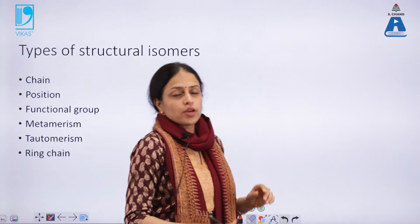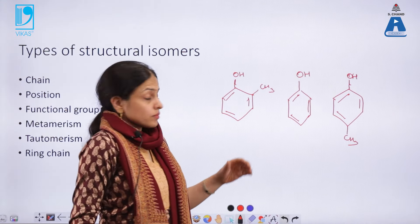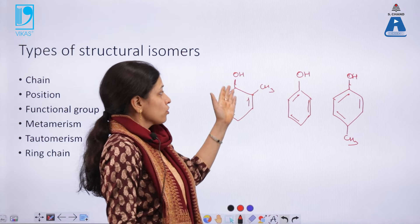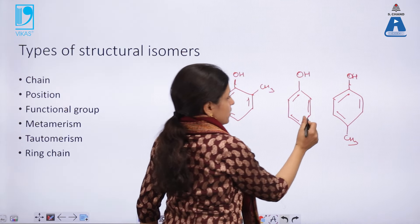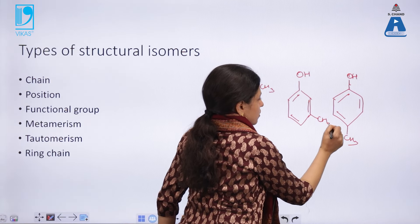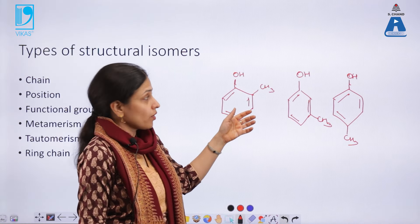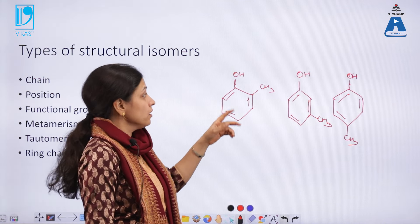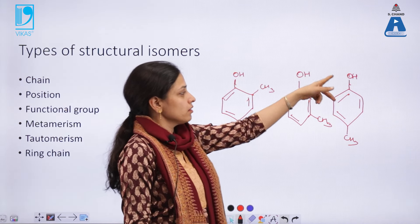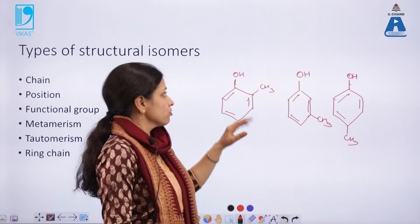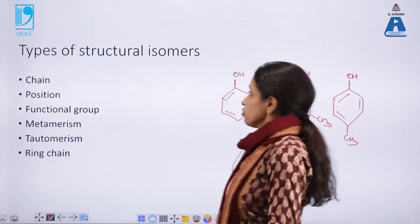The last type of structural isomers are ring-chain isomers. These are examples of ring-chain isomerism using cresol, where the OH and methyl groups can be ortho, meta, or para to each other, giving ortho-cresol, meta-cresol, and para-cresol respectively.